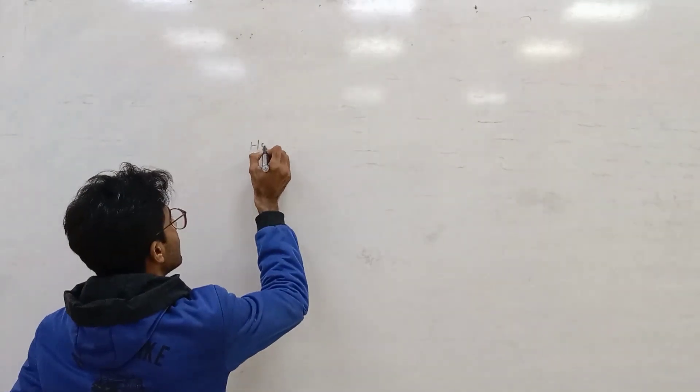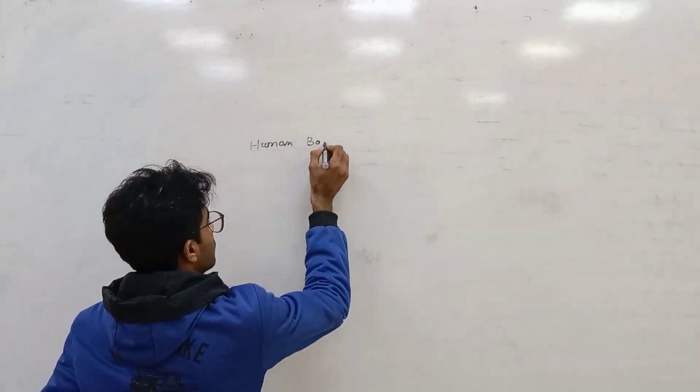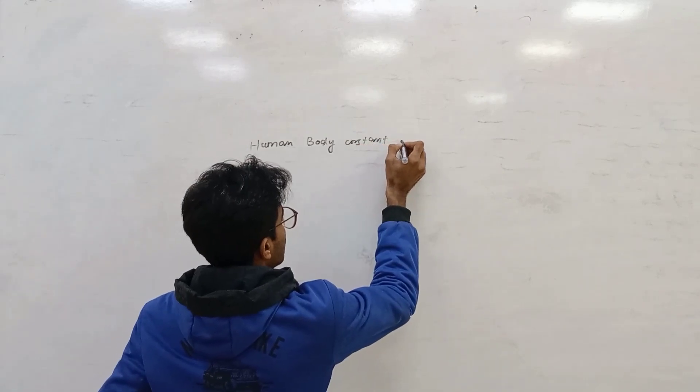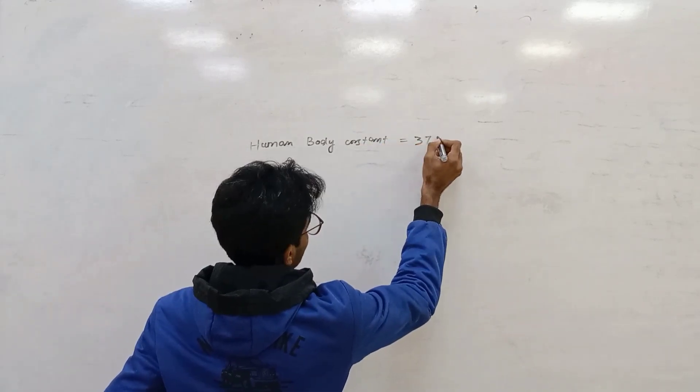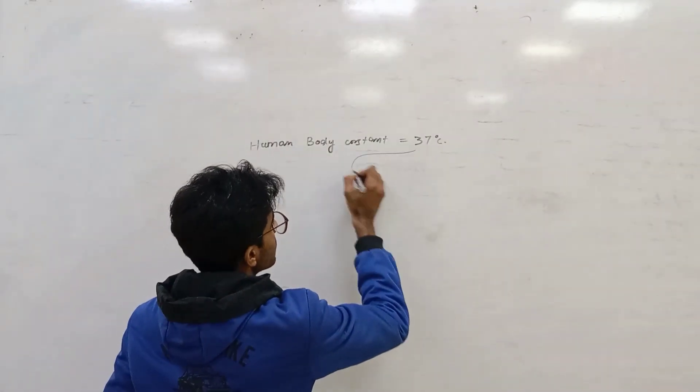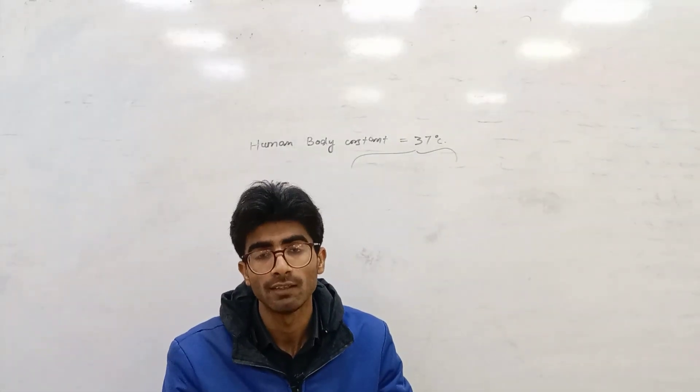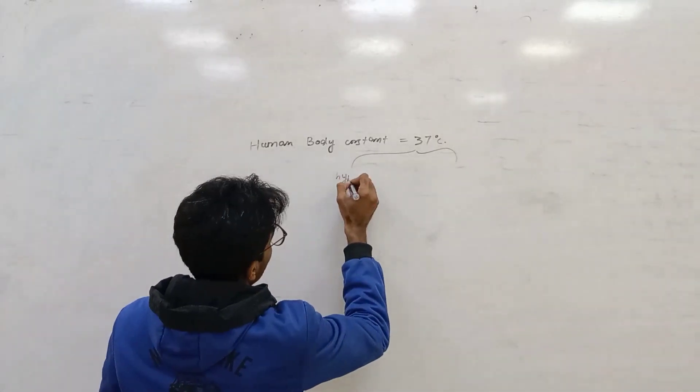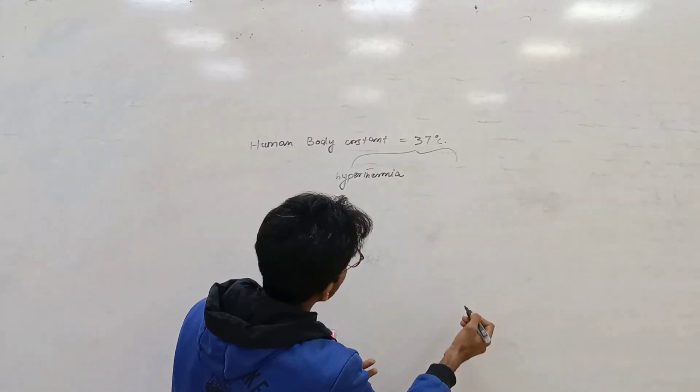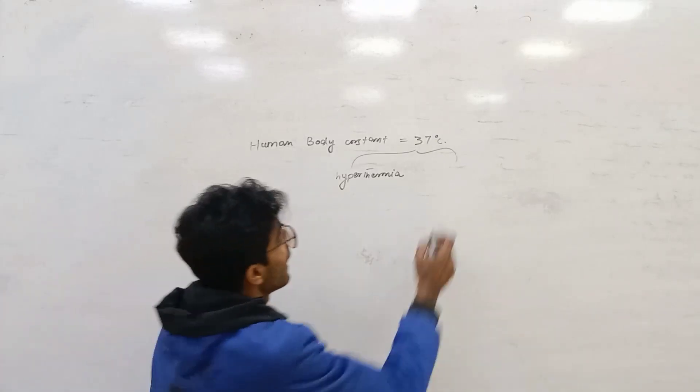Human body constant temperature, normal temperature, is 36.37 normally. Sometimes temperature of the body increased and sometimes temperature of the body decreased. When temperature increased, hypothermia.